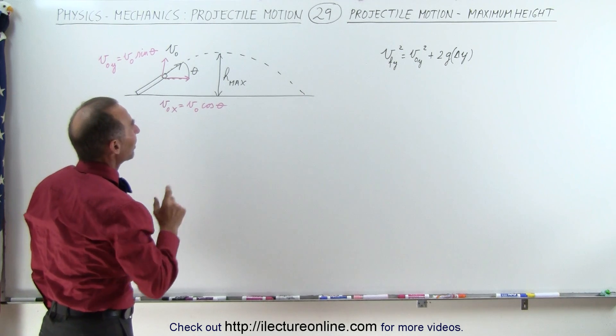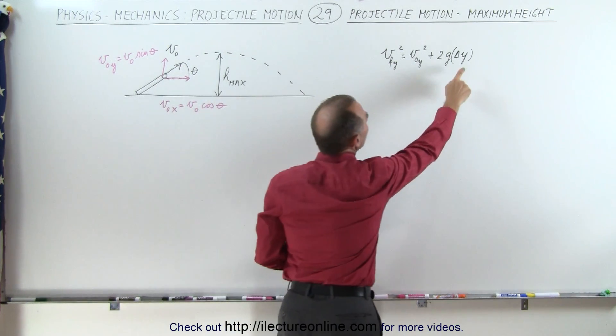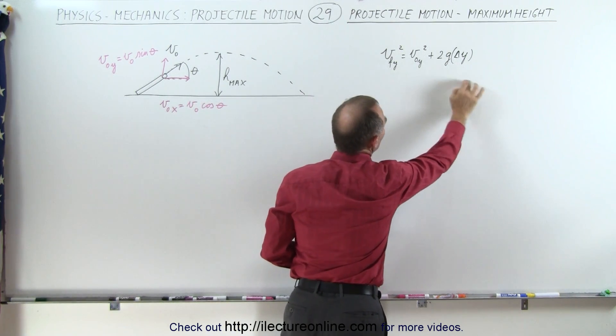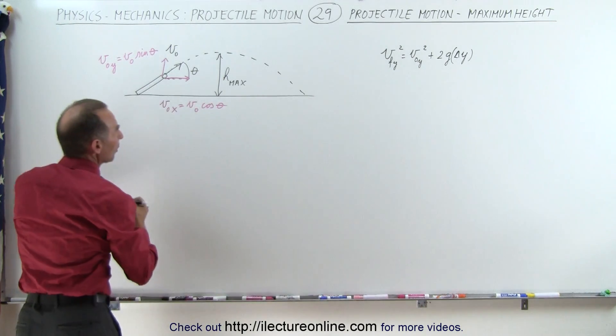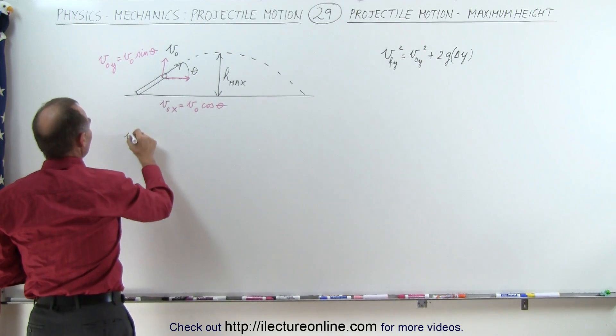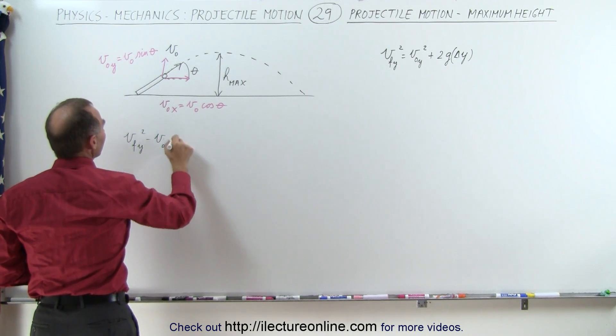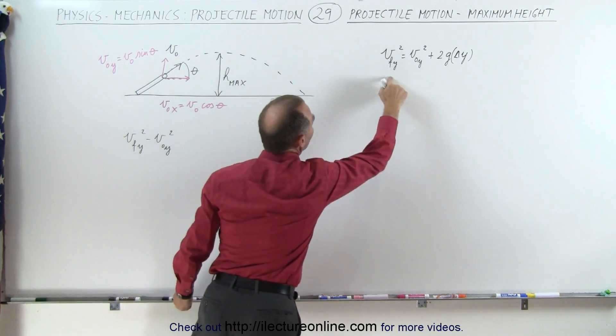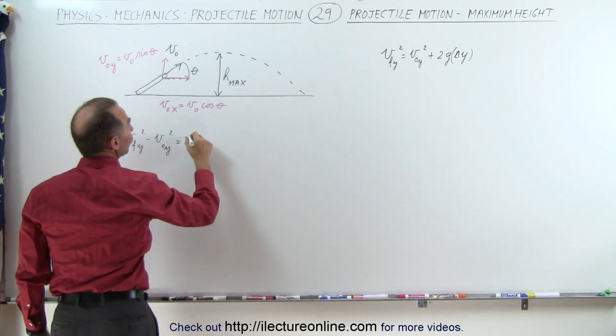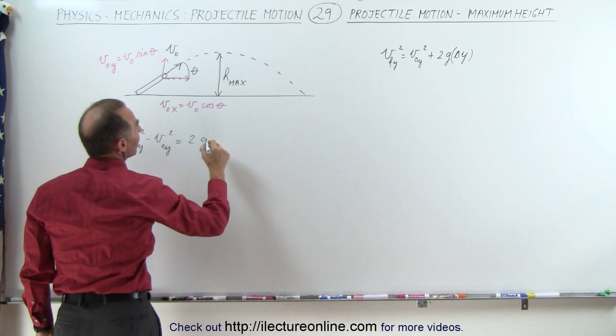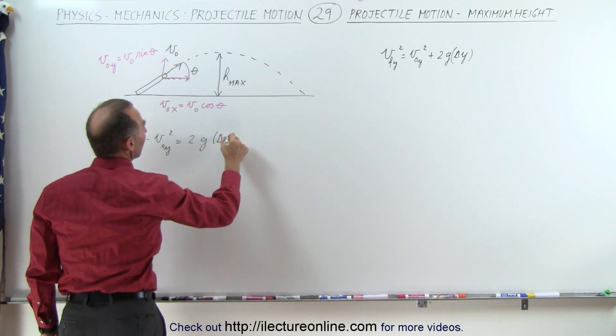Since we're looking for the maximum height, that is going to equate to the change in the y-direction, so let's take this equation and solve for the y-direction, which means that we have v final in the y-direction squared minus v initial in the y-direction squared is going to be equal to 2 times the acceleration of gravity times the change in height.